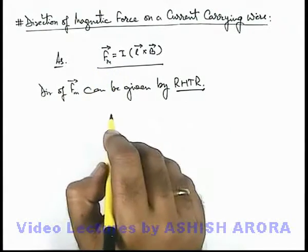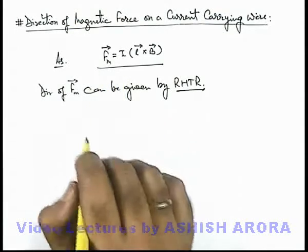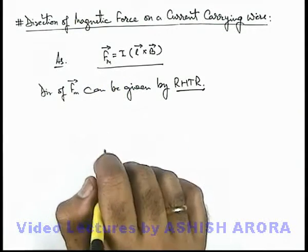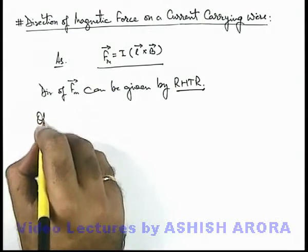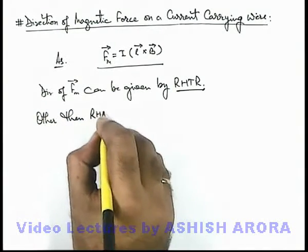But other than right hand thumb rule, there are two rules which are quite useful for analyzing the magnetic force on a wire. Other than right hand thumb rule,